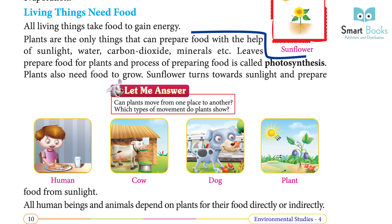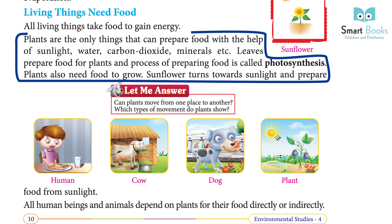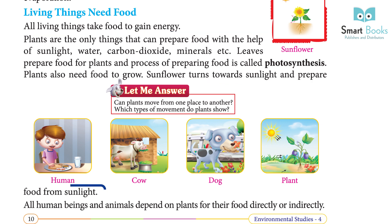Plants are the only living things that can prepare food with the help of sunlight, water, carbon dioxide, and minerals. Leaves prepare food for plants, and the process of preparing food is called photosynthesis. Plants also need food to grow. The sunflower turns towards sunlight to prepare food.